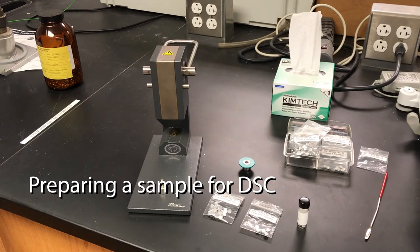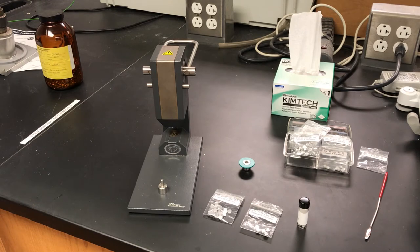So in order to run your samples on the DSC, you have to put the samples in some sample pans and press the pan and lid together.